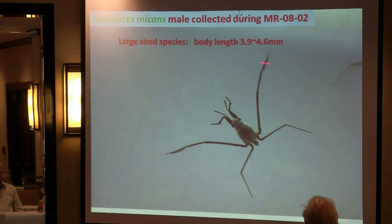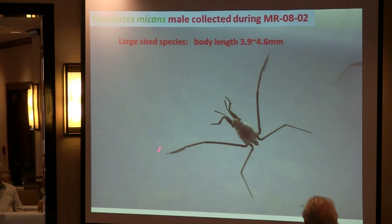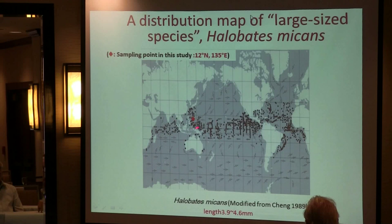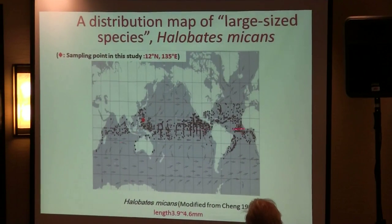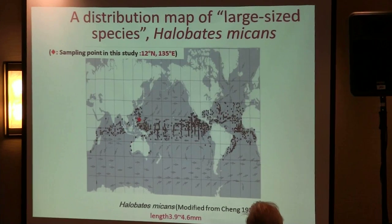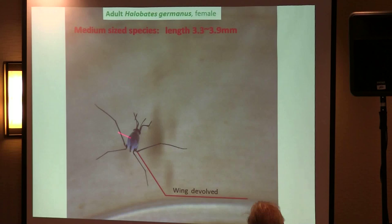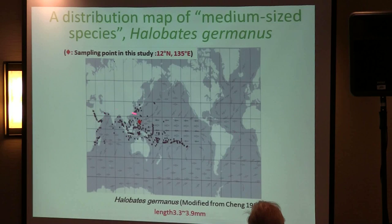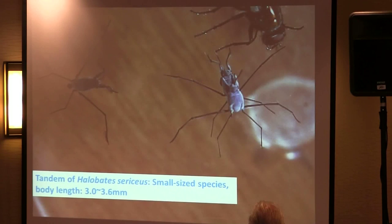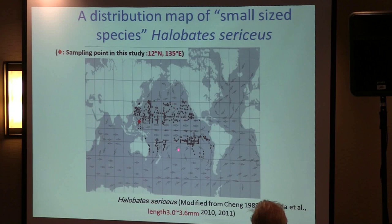The large-size species has some long legs, which are very effective for skating. This large species is distributed mainly around the equator. The mid-sized species, Germanus, is distributed mainly around the islands. And the smaller species is distributed over a very wide latitude area.